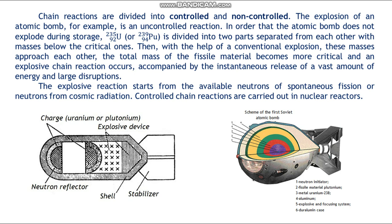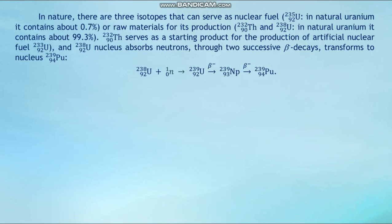Controlled chain reactions are carried out in nuclear reactors. In nature, there are three isotopes that can serve as nuclear fuel. U-235 — in natural uranium it contains about 0.7%. U-232 and U-238 — in natural uranium it contains about 99.3%. U-232 serves as a starting product for the production of artificial nuclear fuel U-233. U-238 absorbs neutrons and through two successive beta-minus decays transforms to nucleus Pu-239.